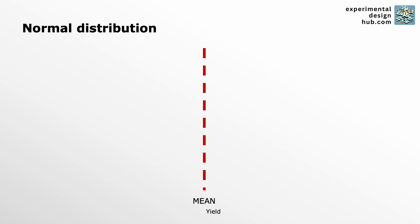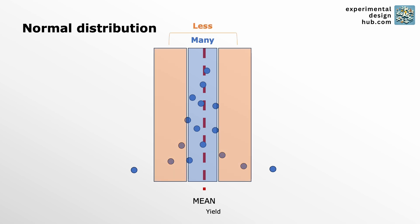If you measure something like the yield of a chemical reaction over and over, most of the results will be close to the average of these measurements. Fewer will be a little further away and only a couple will be way off from the average value.